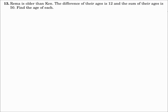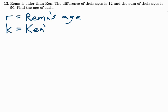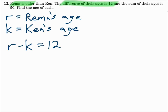Number 13. Rima is older than Ken. The difference in their ages is 12, and the sum of their ages is 50. Find the age of each. So we're looking for their ages, so those will be the variables. Let R be Rima's age and K be Ken's age. Now let's create a system of equations that tells this story. Since Rima is the older one, her age is bigger, so it will be R minus K equals 12. The sum of their ages is 50, so R plus K equals 50. Now we have a system of equations to solve.